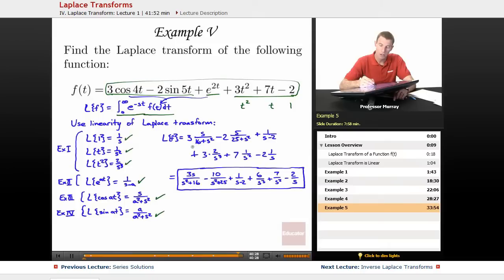So 3 times the transform of cosine of 4t. Cosine, well my a here was 4, so that's where I got that 16 plus s squared. For sine, my a was 5, so that's where I got that 5 and that 25. Plugged in the negative 2 as a coefficient here.